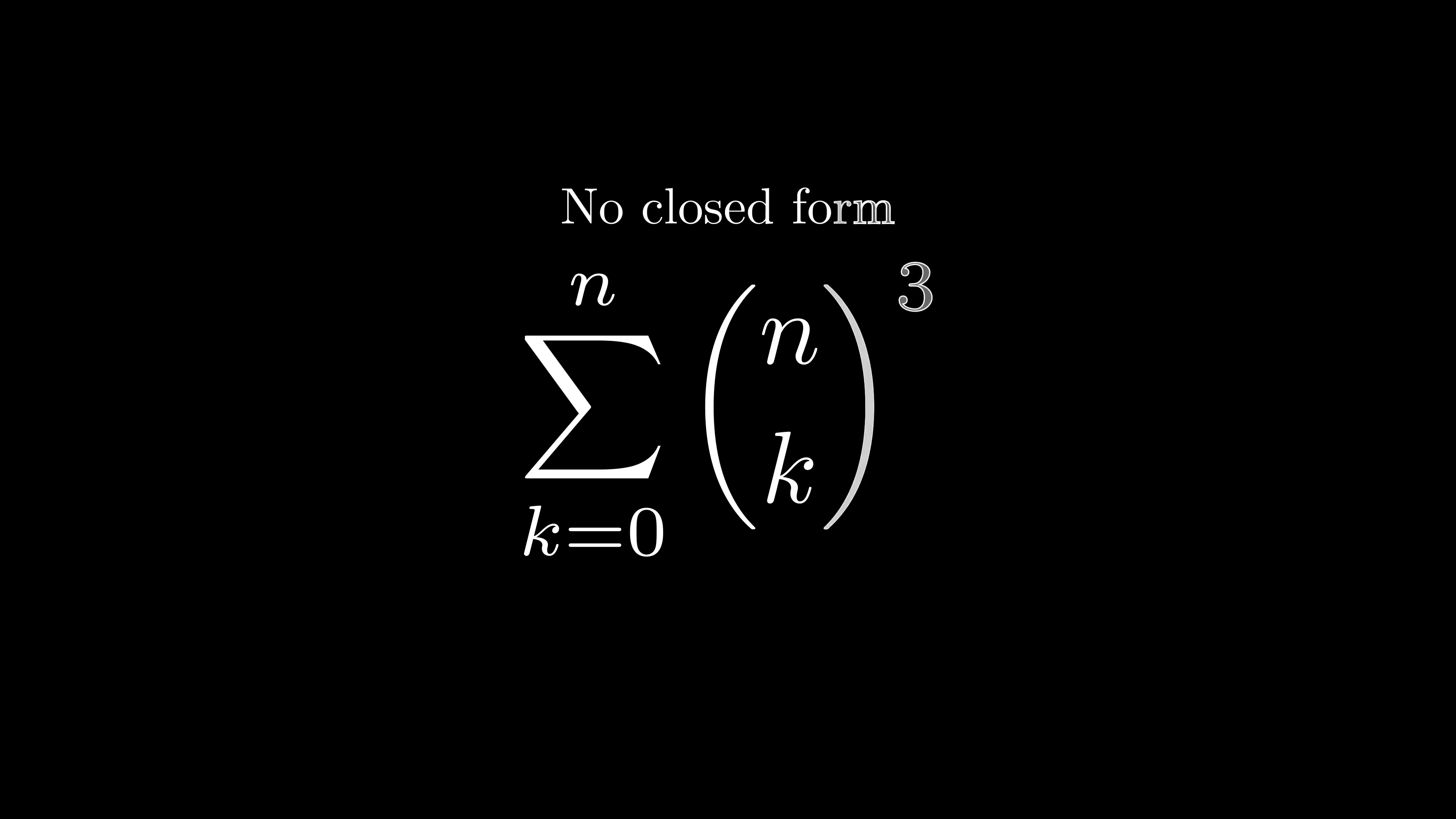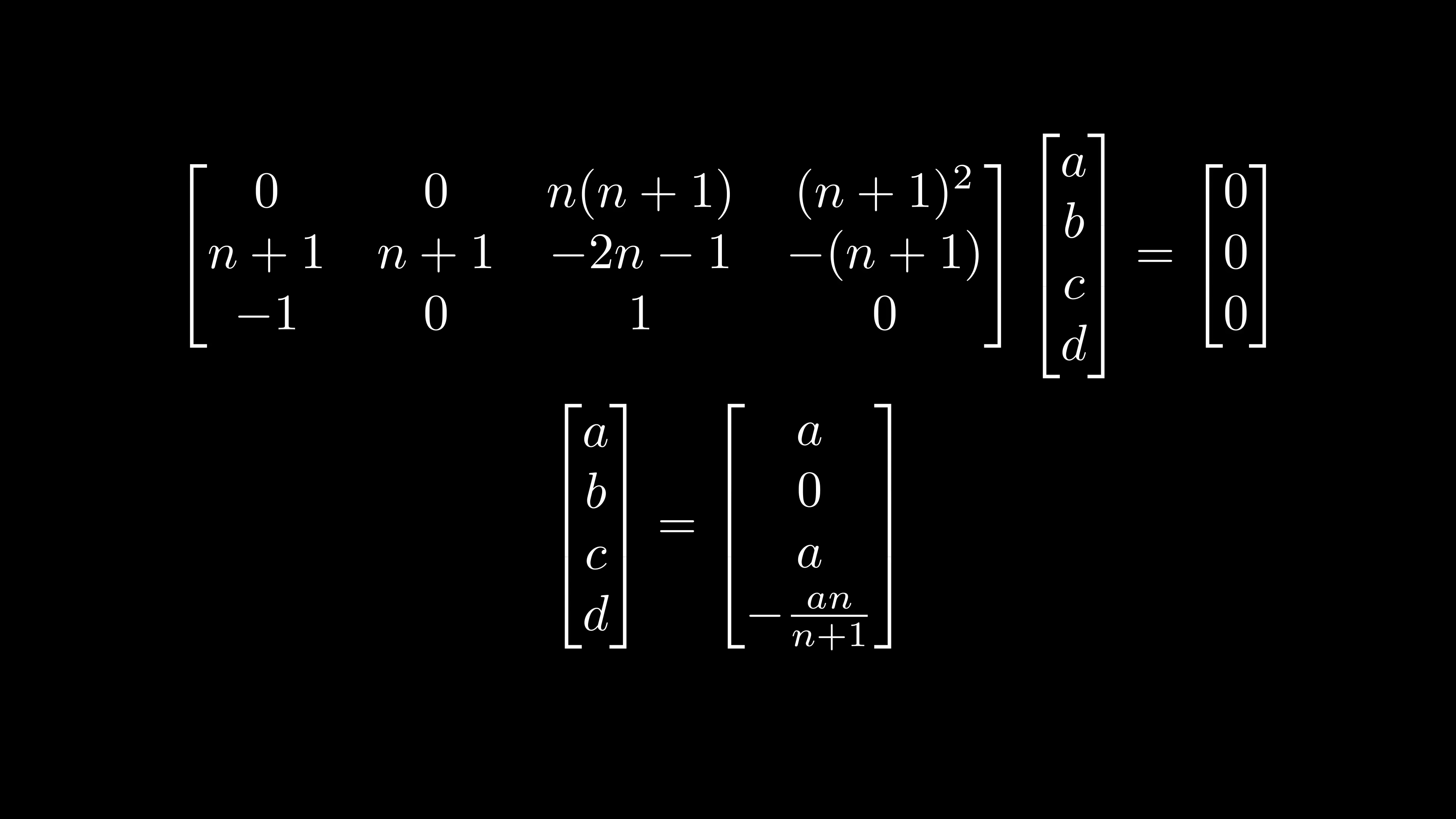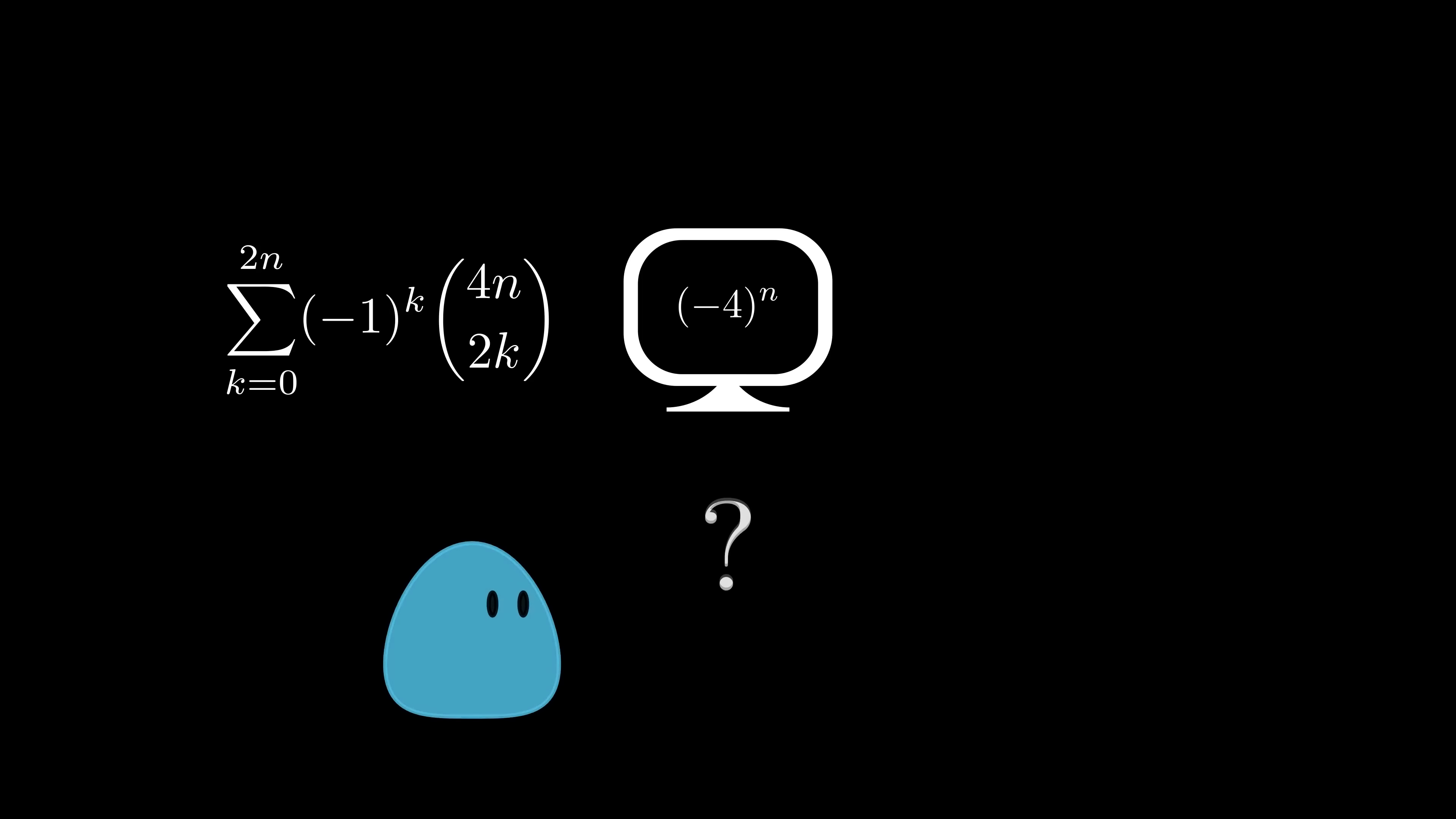Wouldn't it be nice if there was a simple method by which we could provably find the closed form if it exists, and guarantee that one doesn't exist if the method fails? It turns out for a very large class of identities, this is true. Although the method is very simple in concept, the algebra work involved even for simple examples can be very tedious. But with the advent of computer algebra systems, we can just throw these identities into a computer and it will do all the work for us. However, we probably don't want to just blindly trust a computer. After all, math can be very tricky and there's always a possibility of an error somewhere, which is why we expect rigorous proofs of our results.